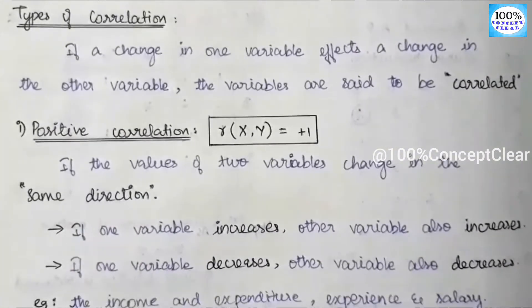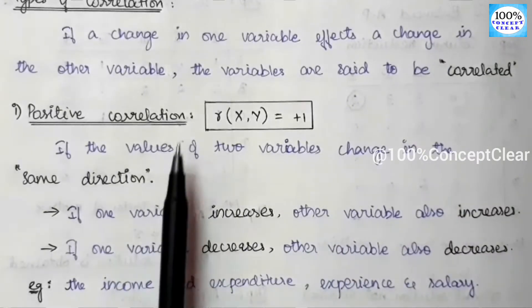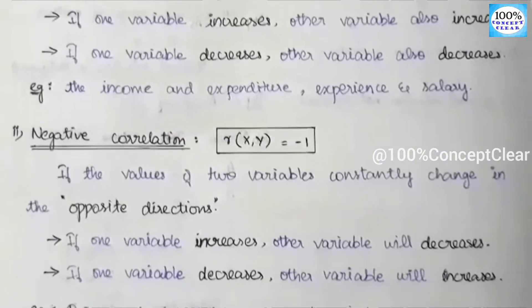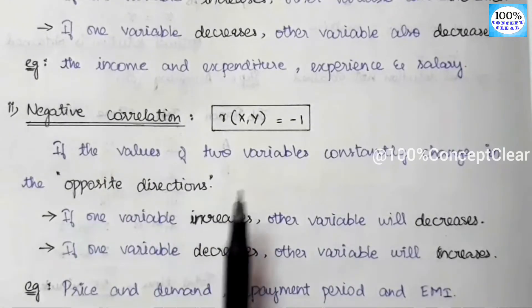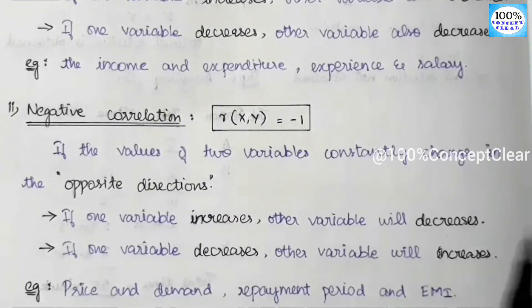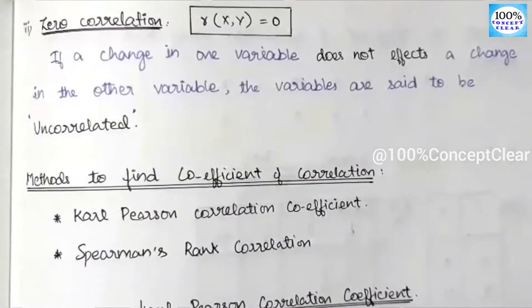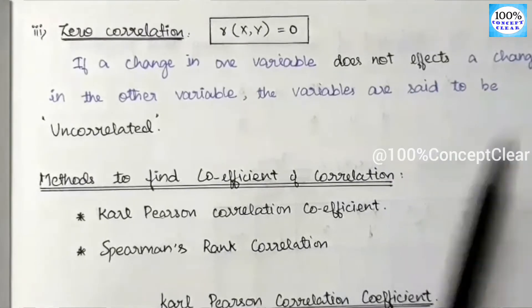Now we have three types of correlation. First is positive correlation — value is plus 1, and two variables move in the same direction. Next is negative correlation — coefficient value is minus 1, and two variables move in the opposite direction: if one increases the other decreases, if one decreases the other increases. Third type is zero correlation — value is equal to 0, meaning there is no correlation between the variables.